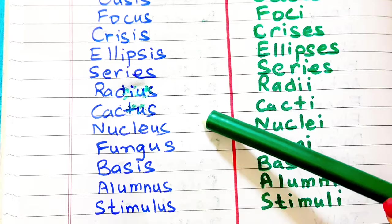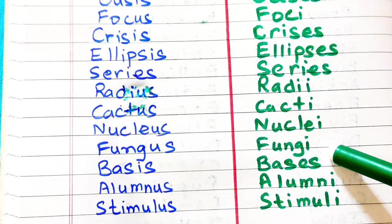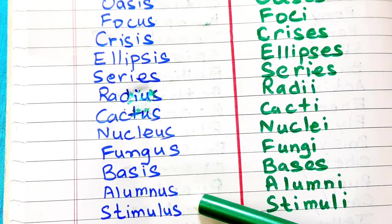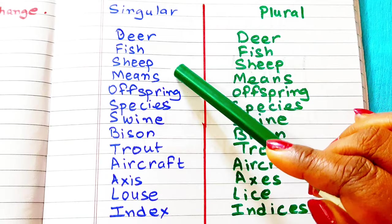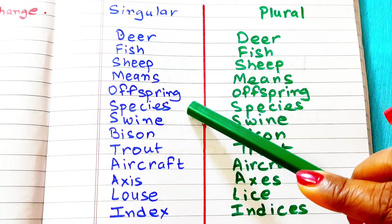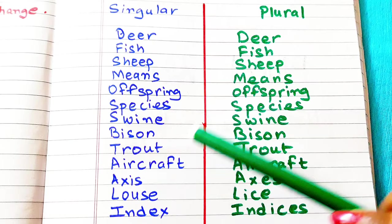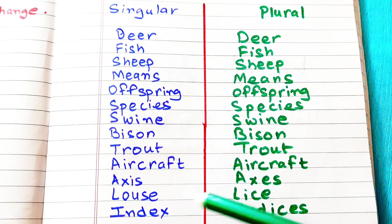Nucleus, nuclei. Fungus, fungi. Basis, bases. Alumnus, alumni. Stimulus, stimuli. Deer, deer. Fish, fish. Sheep, sheep. Means, means. Offspring, offspring. Species, species. Swine, swine. Bison, bison. Trout, trout. Aircraft, aircraft. Axis, axes. Louse, lice. Index, indices.